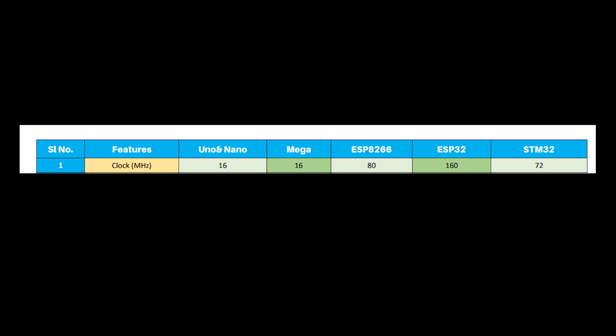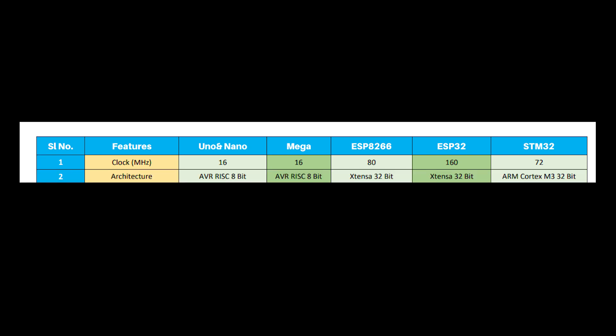First I will differentiate by clock speed. The clock speed of Uno, Nano, and Mega is 16 MHz. ESP8266 has a clock speed of 80 MHz. ESP32 is double that of ESP8266, meaning 160 MHz, and STM32 has a 72 MHz clock frequency.